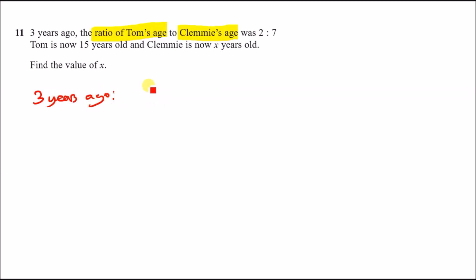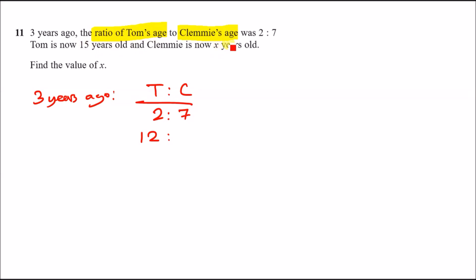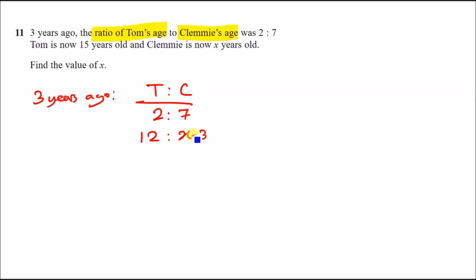Three years ago Tom must have been 12 years old (since he's 15 now), and Clemmy must have been (x − 3) years old. The ratio at that point was 2:7, so we need to find the scale factor between 2 and 12.